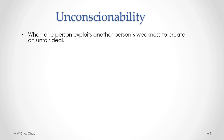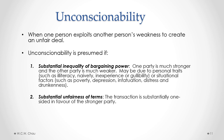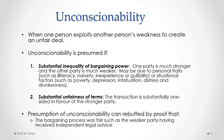The contractual defect of unconscionability is when one person exploits another person's weakness to create an unfair deal. Unconscionability is presumed if we have two things. First, a substantial inequality of bargaining power, where one person is much stronger and the other party is much weaker — this may be due to personal traits such as illiteracy, naivety, inexperience, or gullibility, or situational factors such as poverty, depression, infatuation, distress, or drunkenness. The second requirement is substantial unfairness of terms, where the transaction is substantially one-sided in favor of the stronger party. Once a presumption of unconscionability is raised, it can be rebutted by proof that the bargaining process was fair, such as the weaker party having received independent legal advice before entering into the contract.